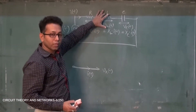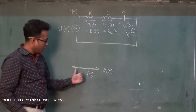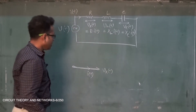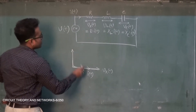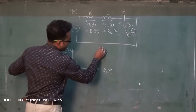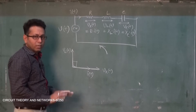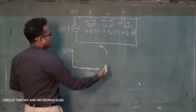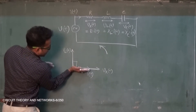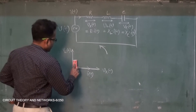Now consider the inductive part. In the case of an inductor, voltage leads the current by 90 degrees. So if i(t) is the current, then V_L(t) leads i(t) by 90 degrees. In our general practice, the anti-clockwise direction is considered the positive direction, so V_L(t) is drawn leading i(t) by 90 degrees in the phasor diagram.